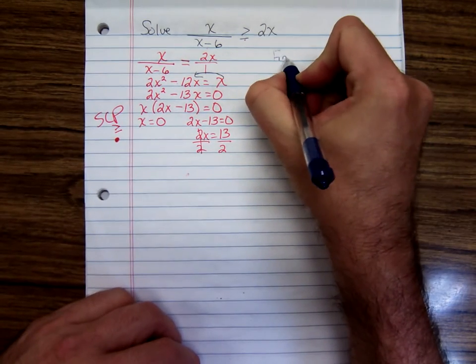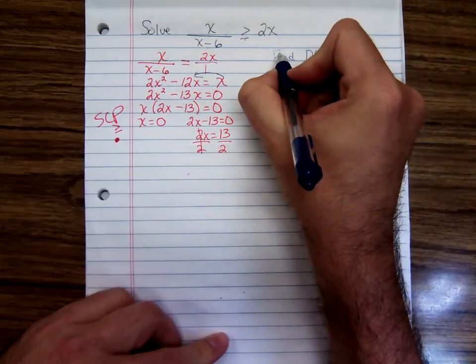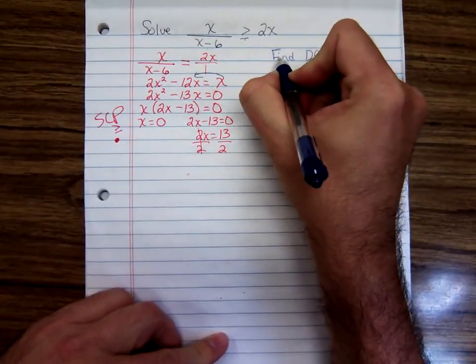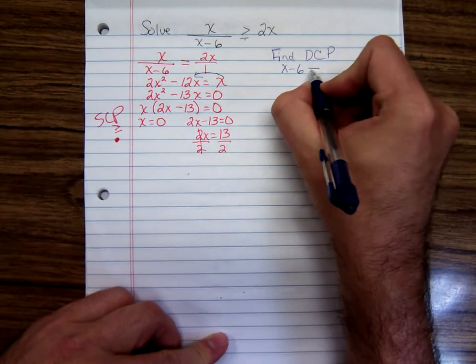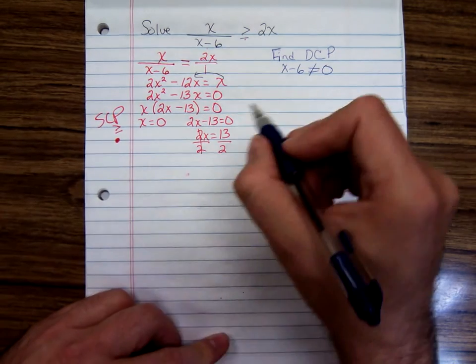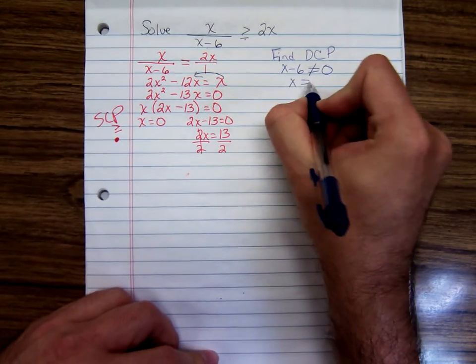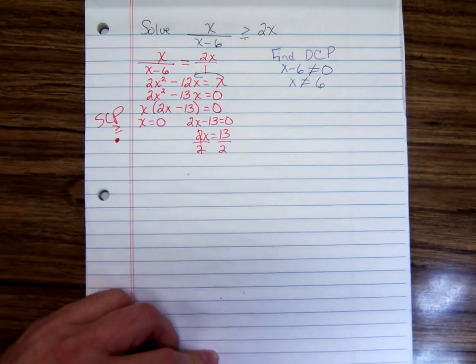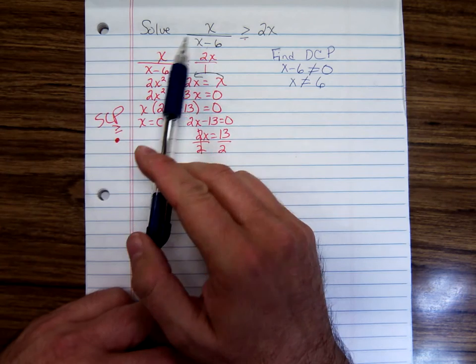Now let's find the denominator cut point or the domain cut point, whatever you want to call it. Well, the one thing we can't ever have in the denominator of a fraction is 0. So x minus 6 can't be 0, which means x cannot be 6. You would never want 6 over 0.